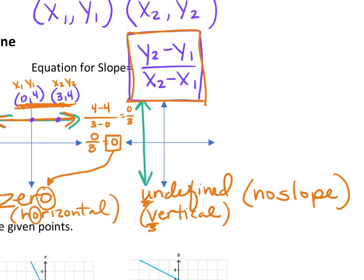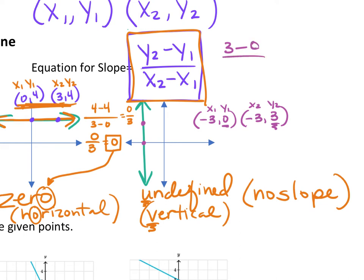If I were to do that with my vertical line — this one is the point (−3, 0) and this one is the point (−3, 3). This is my X1, Y1 and this is my X2, Y2. So I go Y2 minus Y1: three minus zero over X2 minus X1: negative three minus negative three. Three minus zero is three; negative three plus three is zero. If you type three divided by zero into your calculator, it's going to say syntax error. You cannot divide by zero, which is why we say it's undefined — no slope.